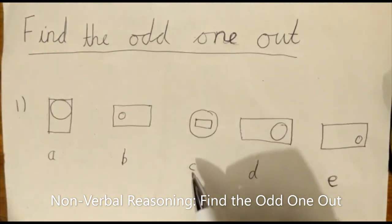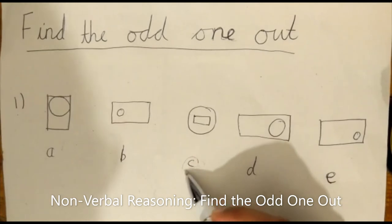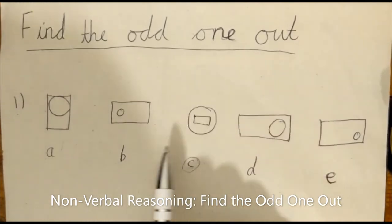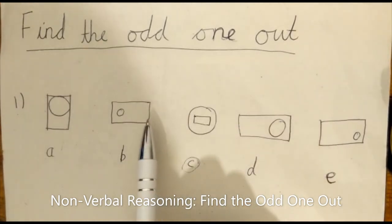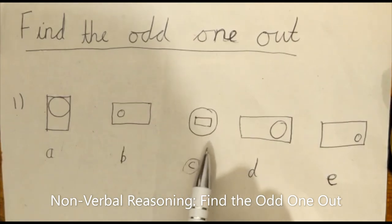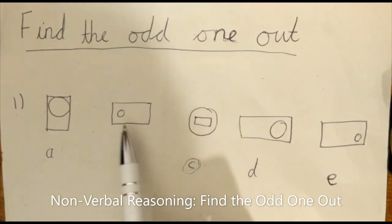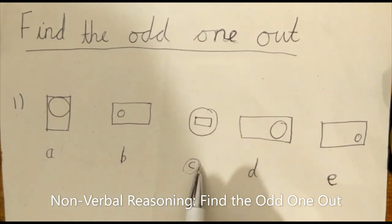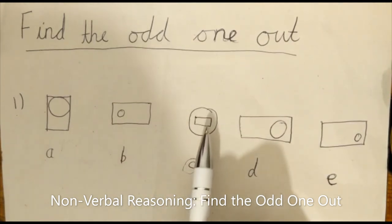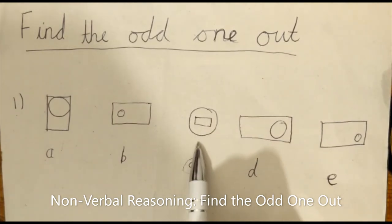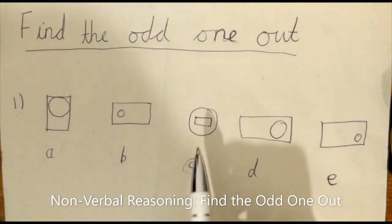Option C is the odd one out because all the other outer shapes except option C are rectangles. Option C's outer shape is a circle, so we know that option C is the odd one out.